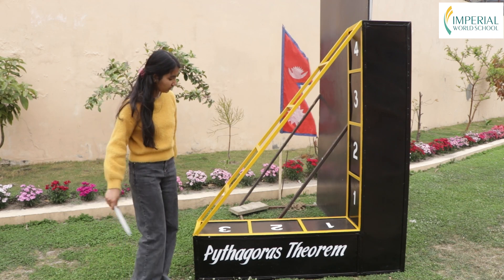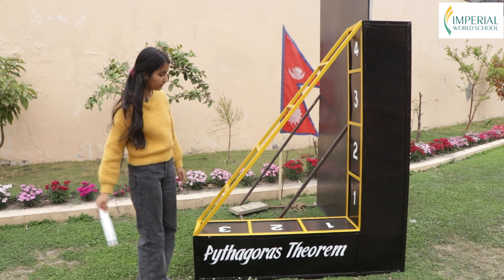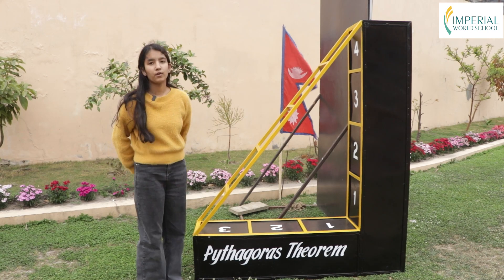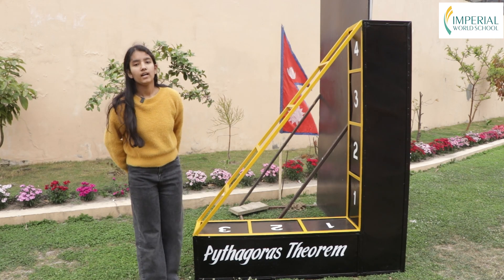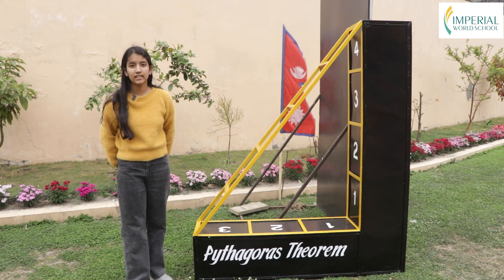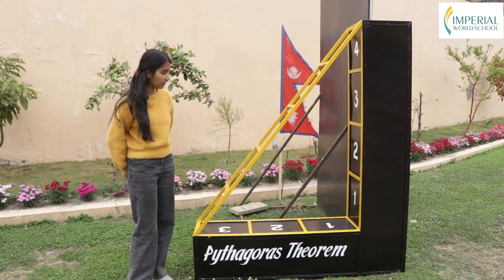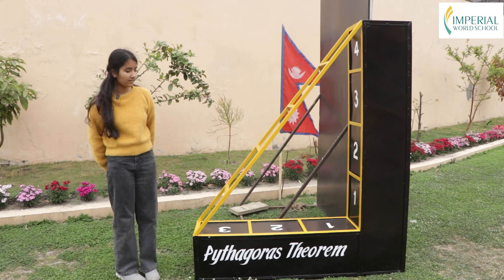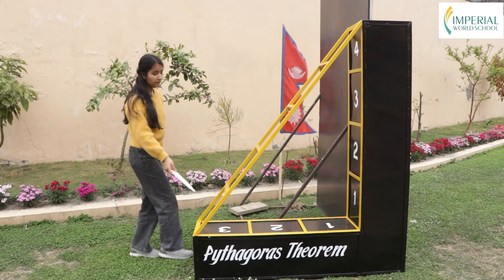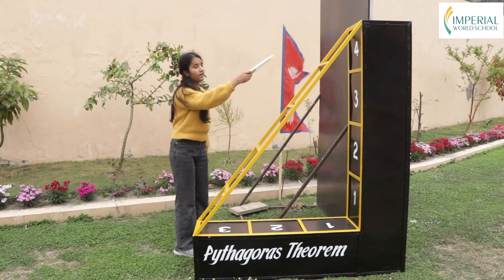We can see that this side has three units — one, two, and three — and the other side has four units. Three square is nine and four square is sixteen. Sixteen plus nine equals twenty-five, and twenty-five is five square, and you can see here we have five units: one, two, three, four, and five.